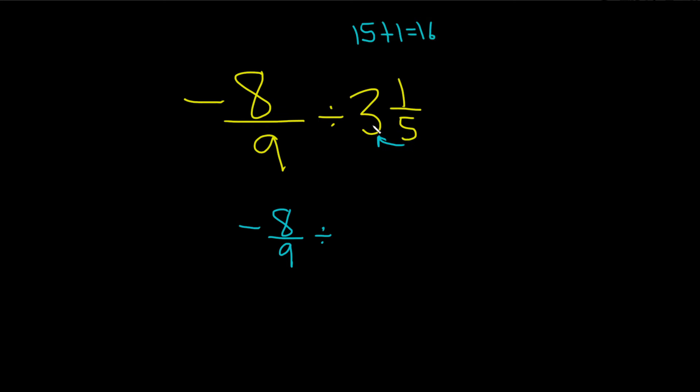So again, 5 times 3 is 15, plus 1 is 16. And this number goes up top, and then you keep the 5 on the bottom.